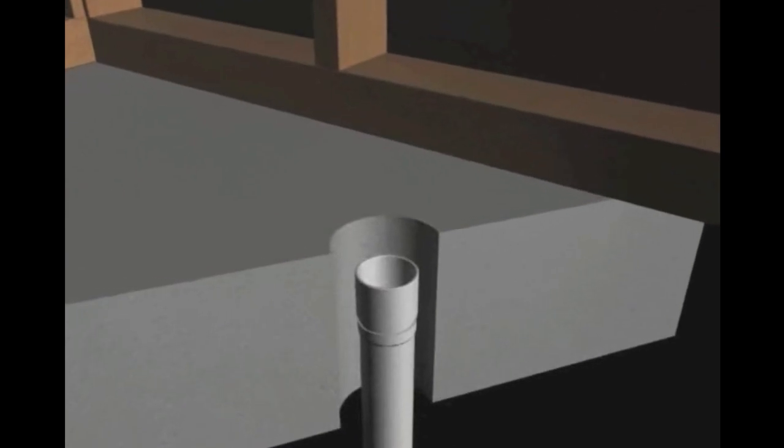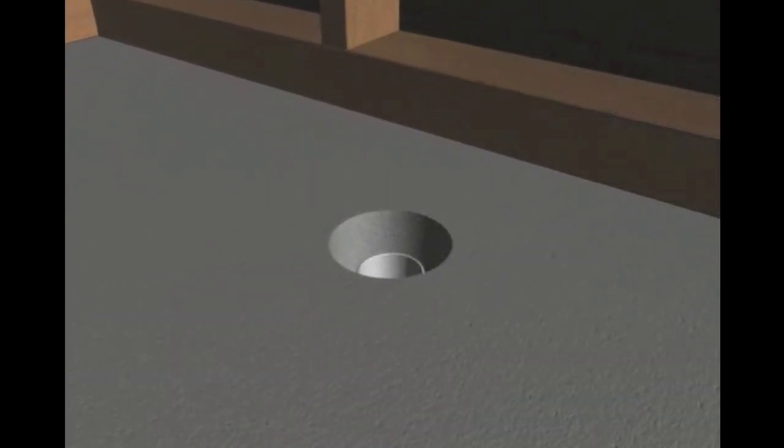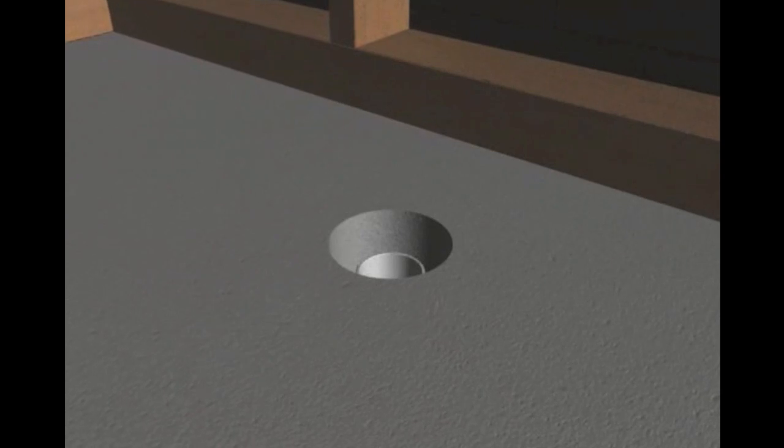First of all, the pipe work is positioned where you require the shower grate. This particular example shows it coming through concrete. The same principles will apply if using through a timber floor and AC sheet.